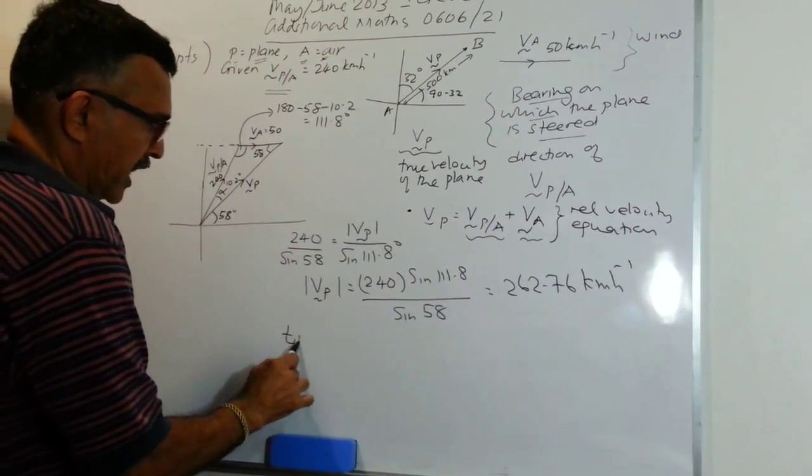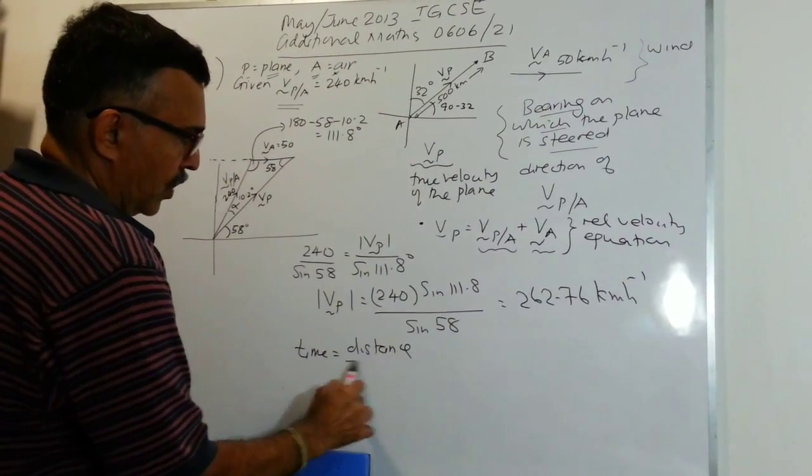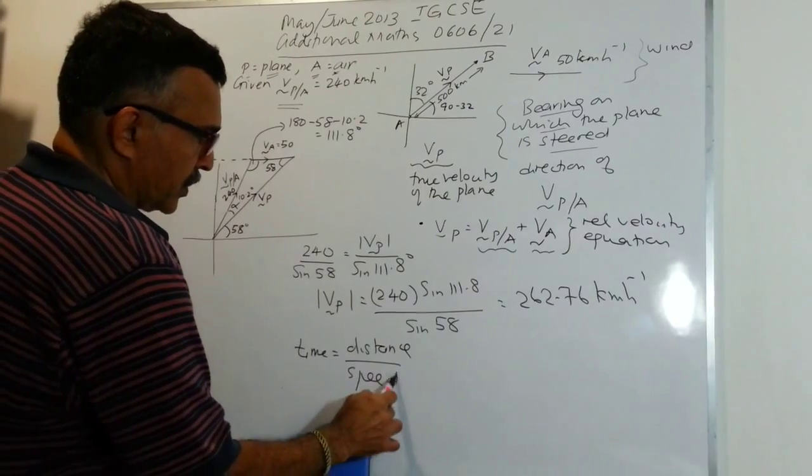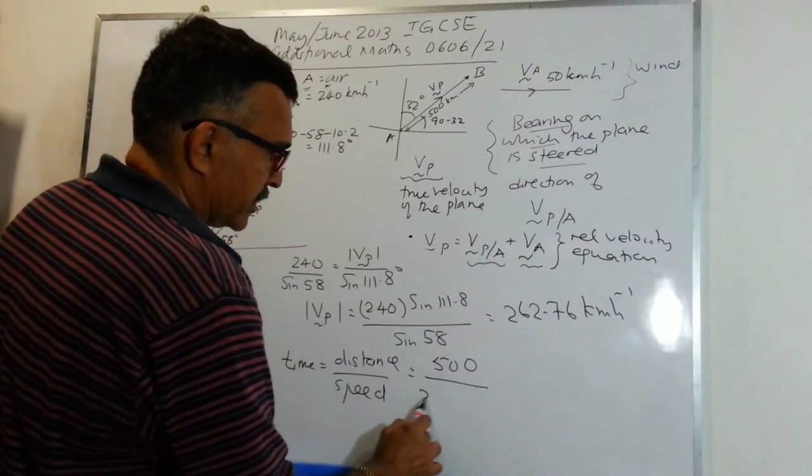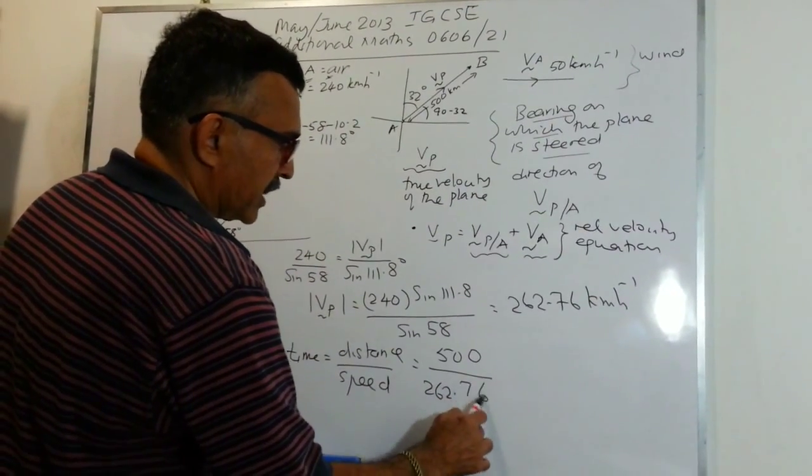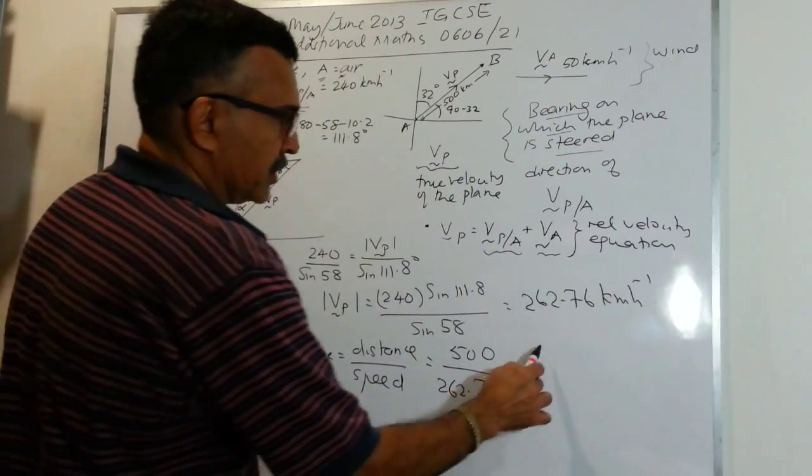We are going to find the time, so time will be distance over speed. The distance along AB is 500, and the speed is 262.76. When you calculate this, you will get 1.9 hours.